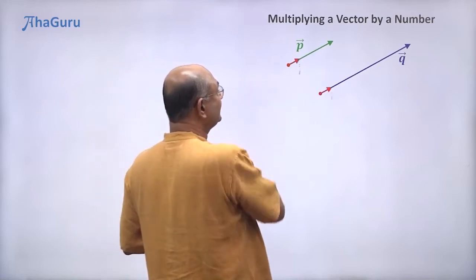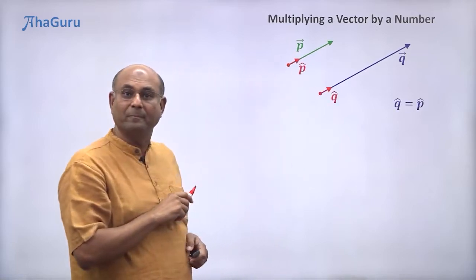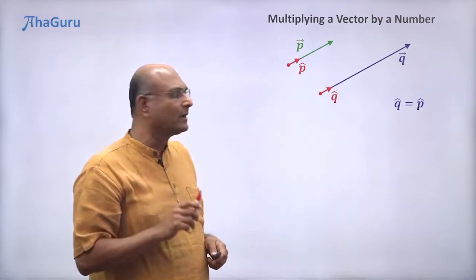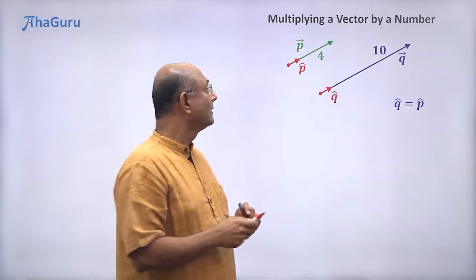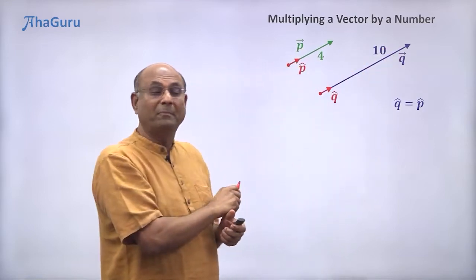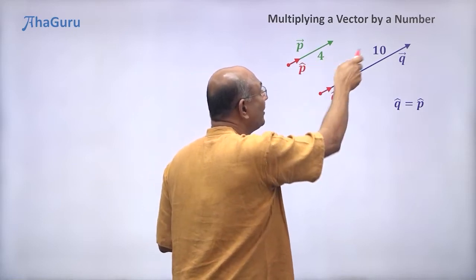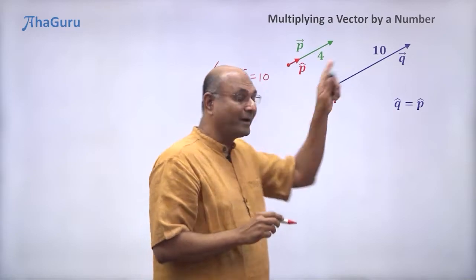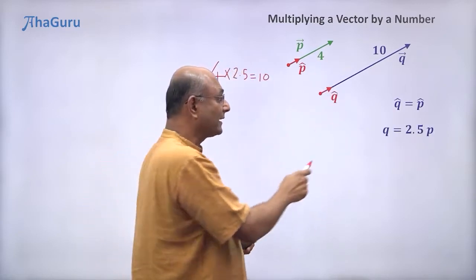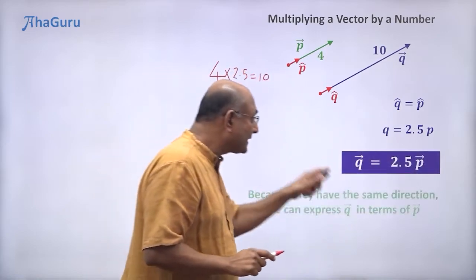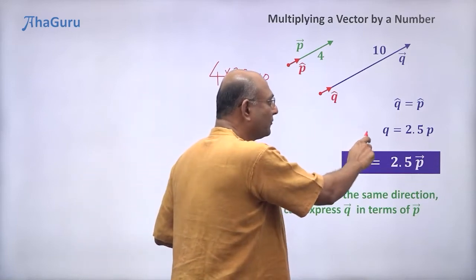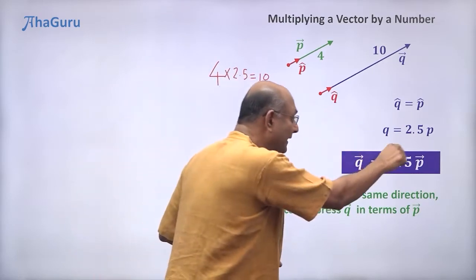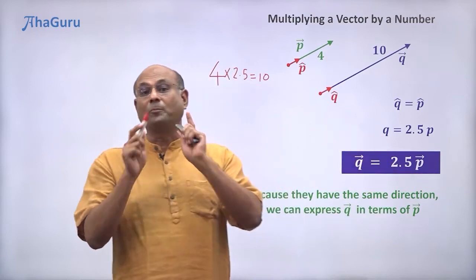Now look at these two vectors — they have the same direction, p cap equals q cap. So I can say q vector must be something times p vector. The length of p vector is 4 and the length of q vector is 10. Since 4 times 2.5 is 10, you can say that q vector is 2.5 times p vector in magnitude. So q vector is 2.5p vector — the magnitude of q vector is 2.5 times that of p vector and the direction is the same, so we are multiplying p vector by 2.5 to get q vector.